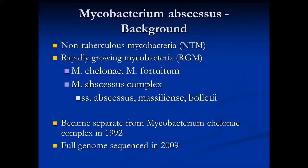For background on M. abscessus: it is a non-tuberculous mycobacterium and a rapid grower. Along with M. chelonae and M. fortuitum, it rounds out the three rapid growers. Subspecies include abscessus, massiliense, and bolletii, although the last two may be hard to distinguish from each other. It became separate from the M. chelonae complex in 1992, and the full genome was sequenced in 2009.